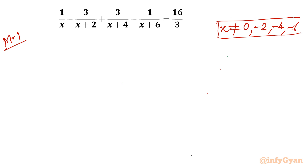Now I will begin with substitution. You can see the denominators have 0, 2, 4, and 6. The midpoint is x plus 3. So let me consider x plus 3 equal to t.